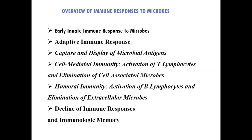To summarize: when exposed to infectious antigens or microbes, the first response is provided by innate immunity. If that fails, adaptive immune response occurs, which includes capture and display of microbial antigens, cell-mediated immunity, and humoral immunity. Once the adaptive immune system completes its function, lymphocytes return to normal state — a process called homeostasis. Antigen-stimulated cells are eliminated by apoptosis, and immunological memory cells are produced for future repeated exposure.